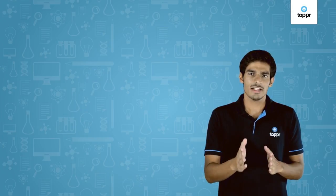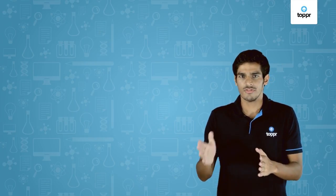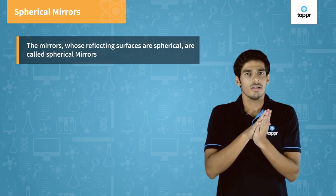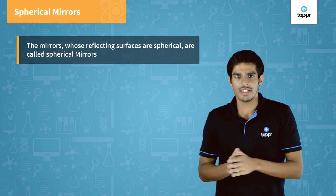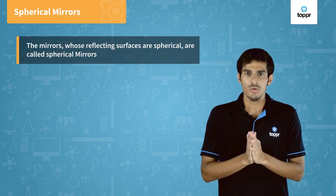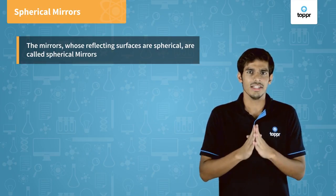The reflecting surface of the spherical mirrors are a part of a sphere. Therefore, the mirrors whose reflecting surface are spherical are called spherical mirrors. Now, let us explore these mirrors in detail.